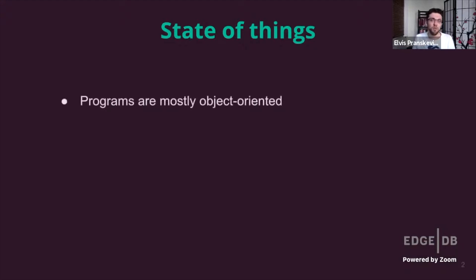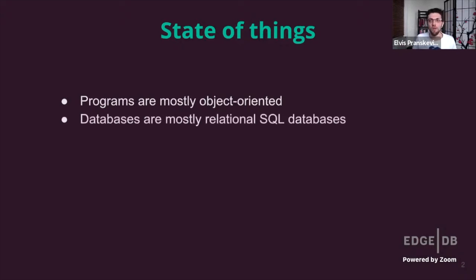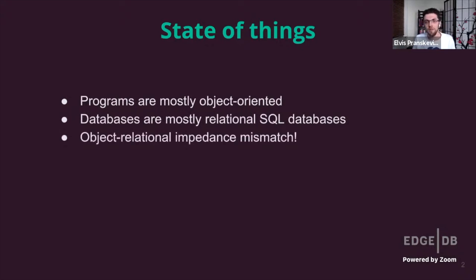About 30 years ago, the world decided that the majority of programs would be modeled and written in some object-oriented programming language, but also that those same programs would store most of their state in some SQL database. Unfortunately, we immediately realized that this is far from ideal and problematic enough that we came up with a name for the issue: object-relational impedance mismatch.